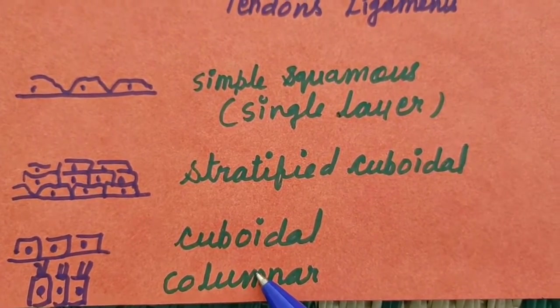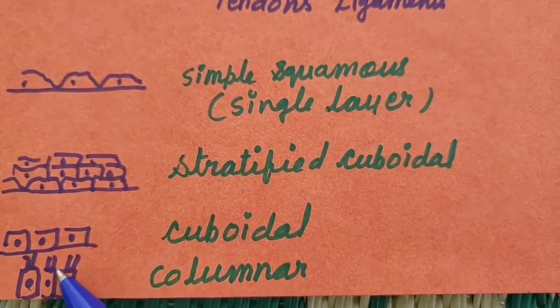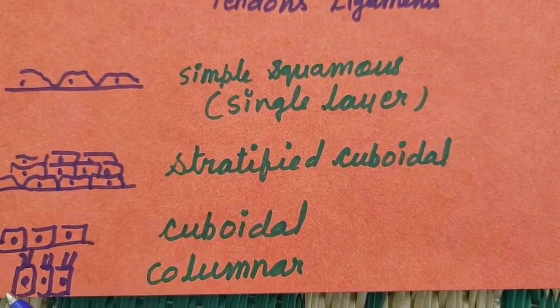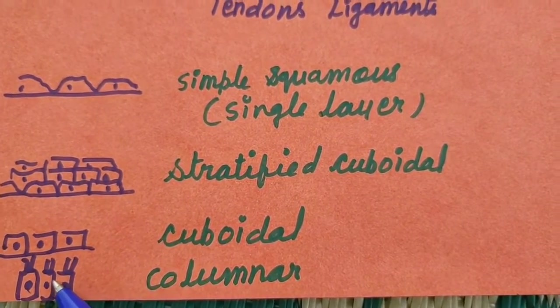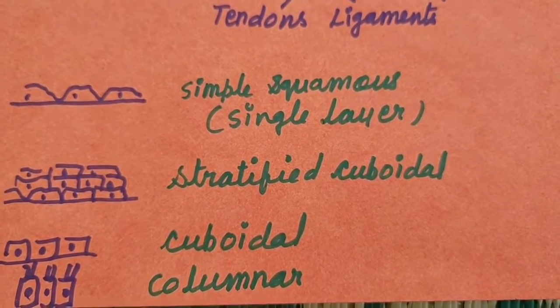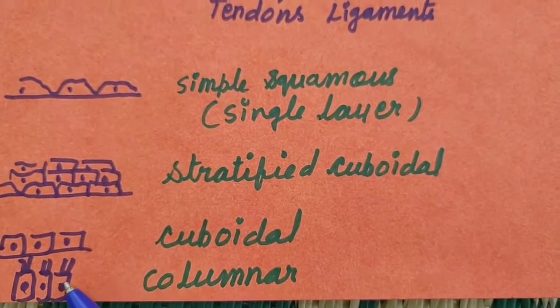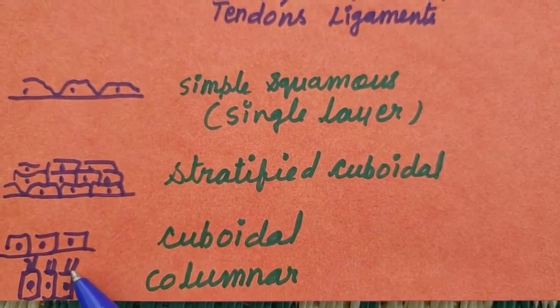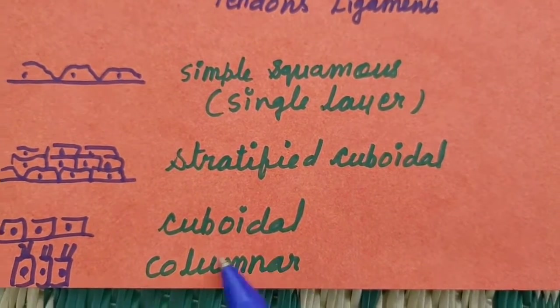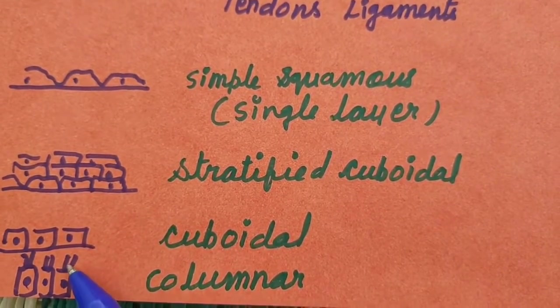Then, columnar epithelium. You see, they are vertically arranged and tall in size. And what about shape? Shape may be cylindrical or brick-like. And generally, these cells are found in the inner lining of stomach and intestine. And you can see here, cilia-like structure, some thread hair-like structure.